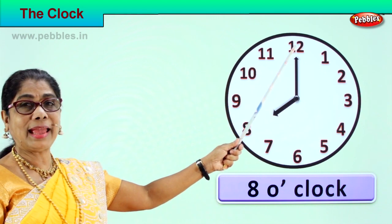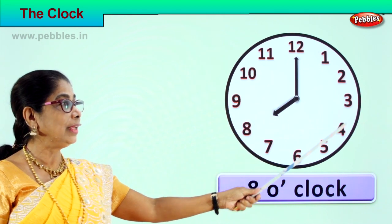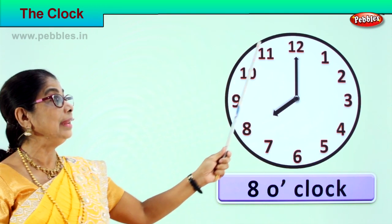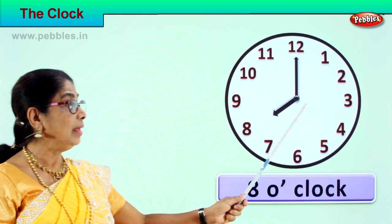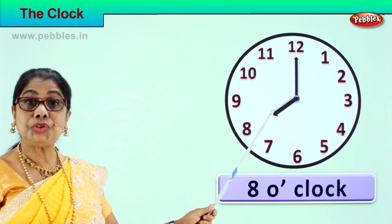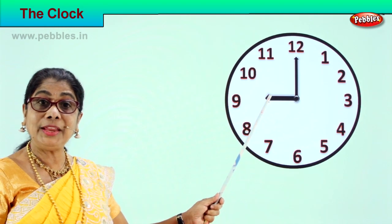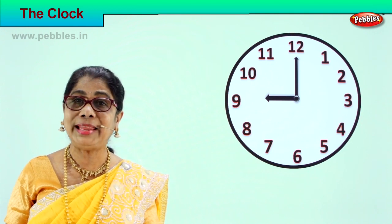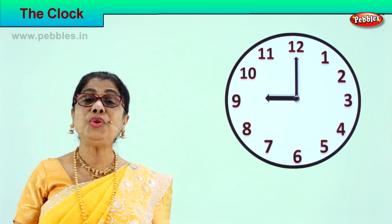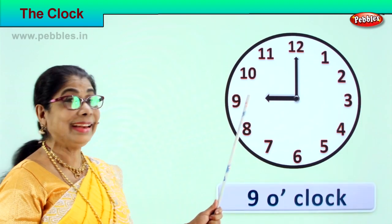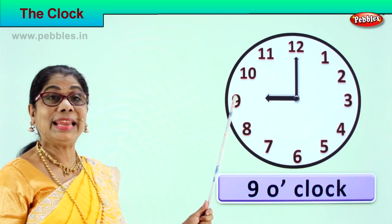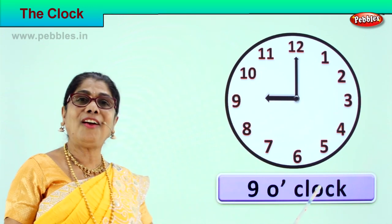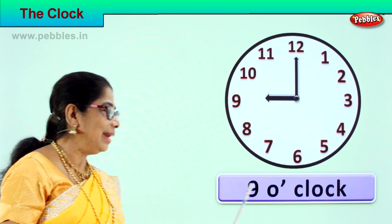Now the minute hand goes from one, all the way to eleven, and comes back to twelve. The hour hand shifts from eight to nine. Look at the position of the clock. How do you read the time? You read it as nine o'clock because the hour hand is on nine and the minute hand is on twelve. Nine o'clock.